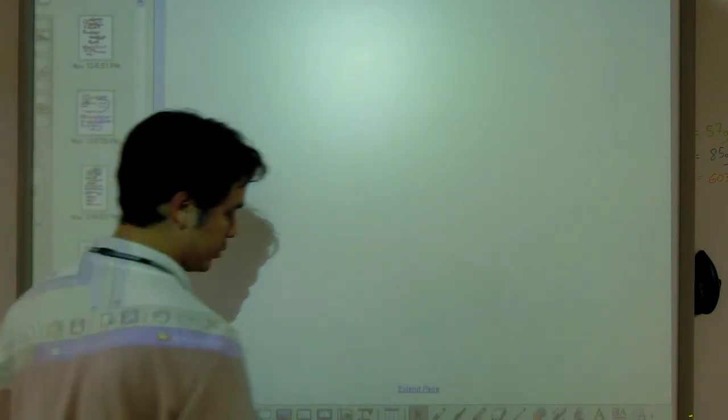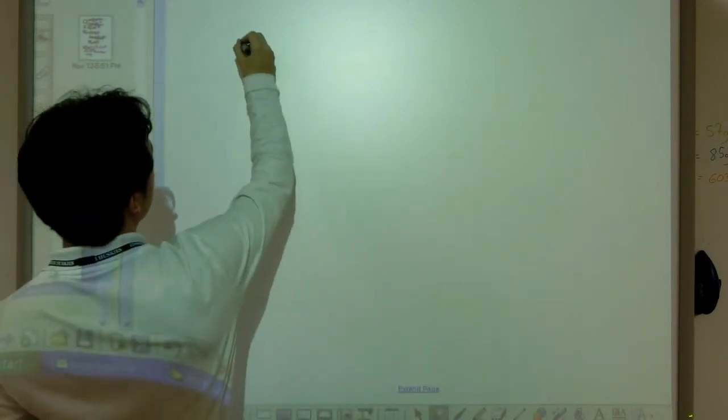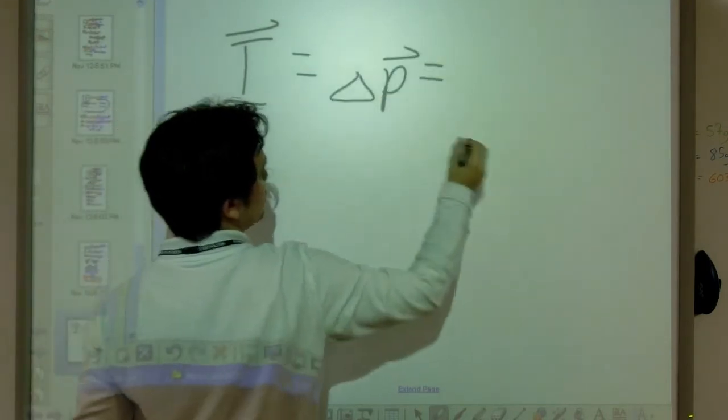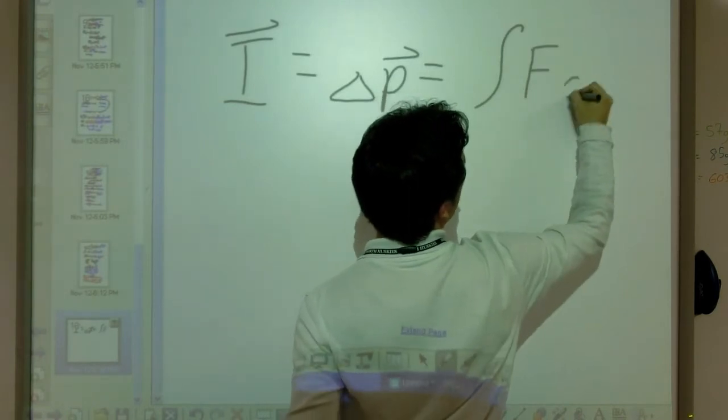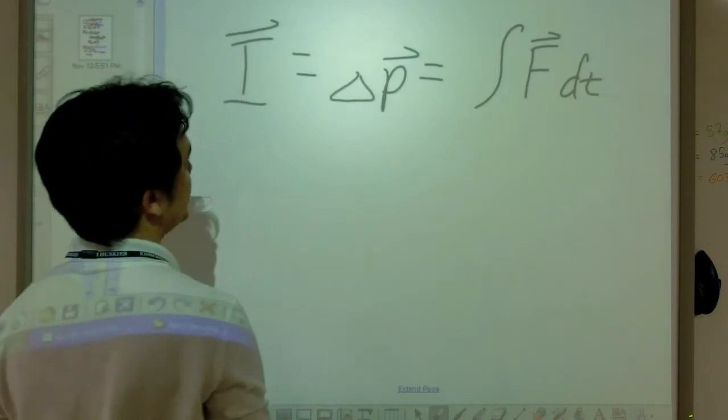Now the main calculus relationship that we have for momentum deals with impulse, where impulse, which is equal to our change in momentum, is also equal to the integral of F dt. All of these are vectors.